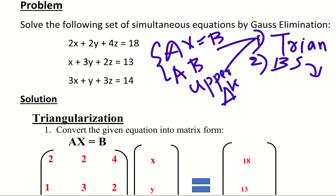We are going to do a problem. The equations are: 2x plus 2y plus 4z is equal to 18; x plus 3y plus 2z is equal to 13; 3x plus y plus 3z is equal to 14.